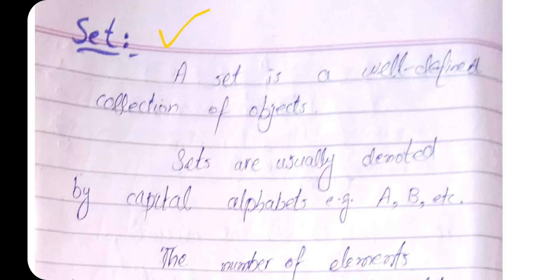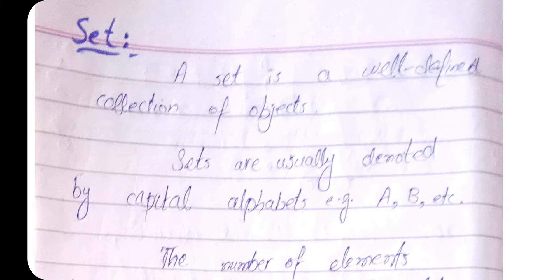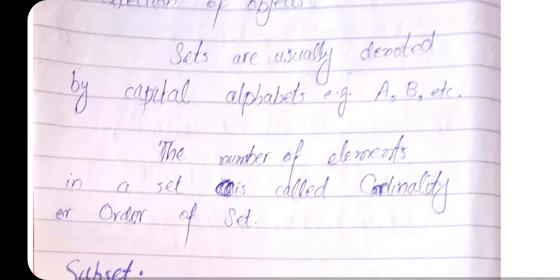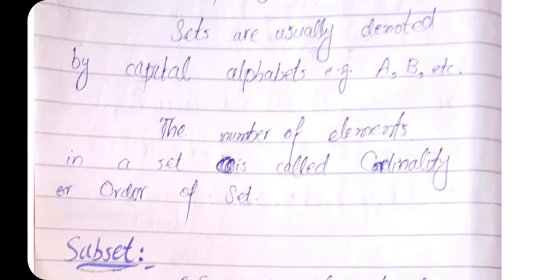The definition of a set: a set is a well-defined collection of distinct objects. Sets are usually denoted by capital letters such as A, B, C, X, Y, or Z. The elements of the set are represented by small letters. The number of elements present in a set is called the cardinality of the set, or the order of the set.